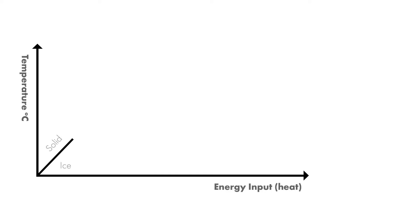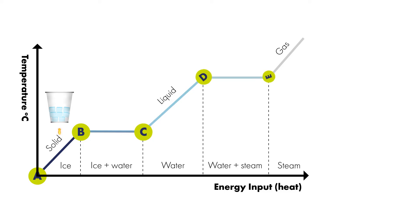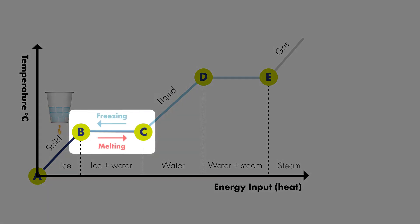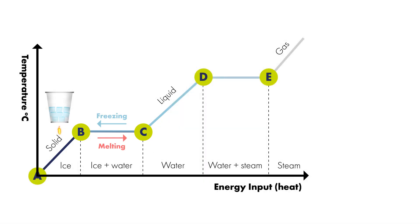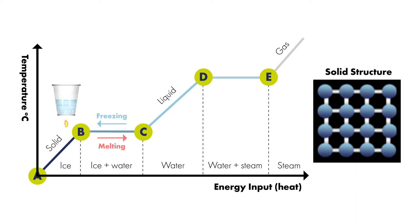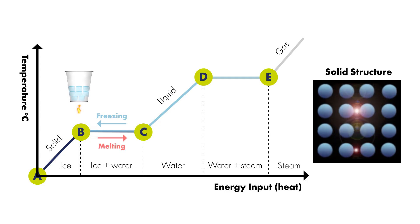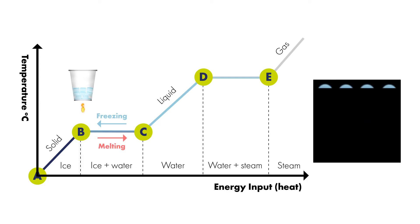Now let's take a closer look at ice, water, and steam. If we heat up a cube of ice to its melting point — please see points between B and C on the graph — the heat energy absorbed at this melting point is busy breaking the bonds between the individual water molecules. Once enough bonds between molecules have been broken, the ice cube will melt and become liquid.